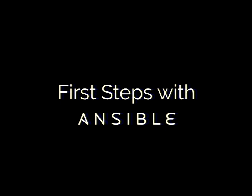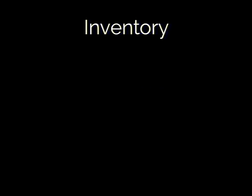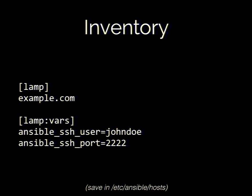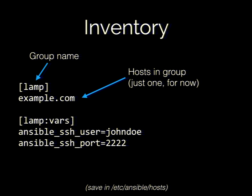Ansible needs a way to describe your infrastructure, and it's pretty simple — if you've ever edited a hosts file, it's practically the same. You give it a list of hosts, and with Ansible you can also give it a list of variables. This is a basic inventory file: first you give a group name, like web servers, database servers, or in our case LAMP. Then a list of hosts — in our example, just one — and some variables to use with that host, like a username or port. By default this inventory file lives at /etc/ansible/hosts.